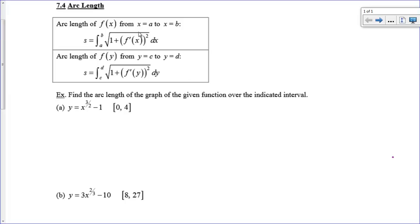You've got one formula if you're working in x's, and one formula if you're working in y's, and it's just the integral from a to b of the square root of 1 plus the derivative squared. It's pretty straightforward and fairly easy.